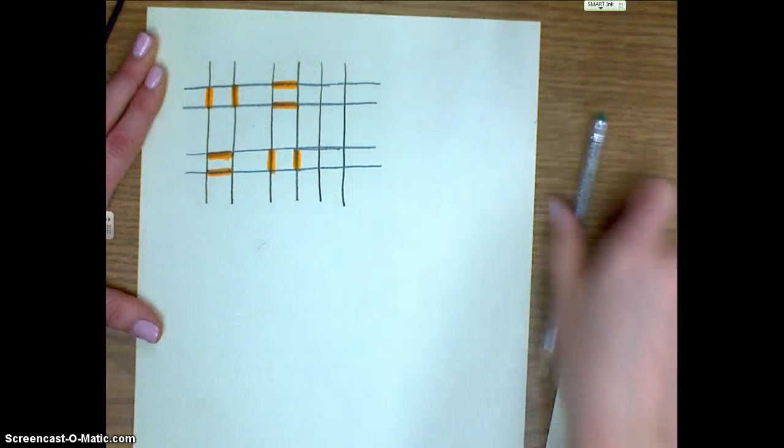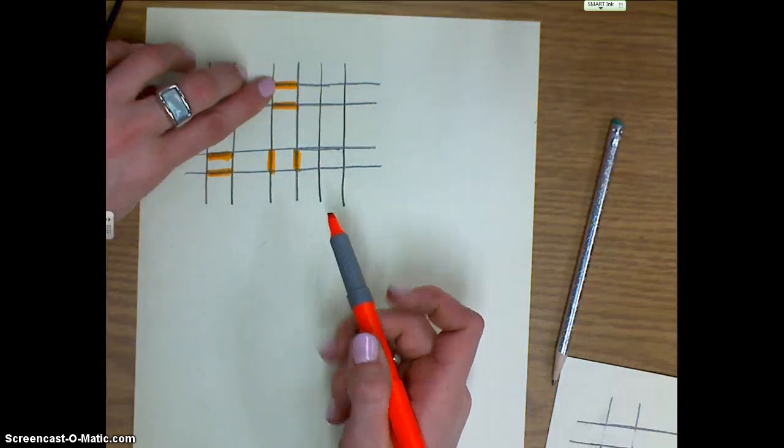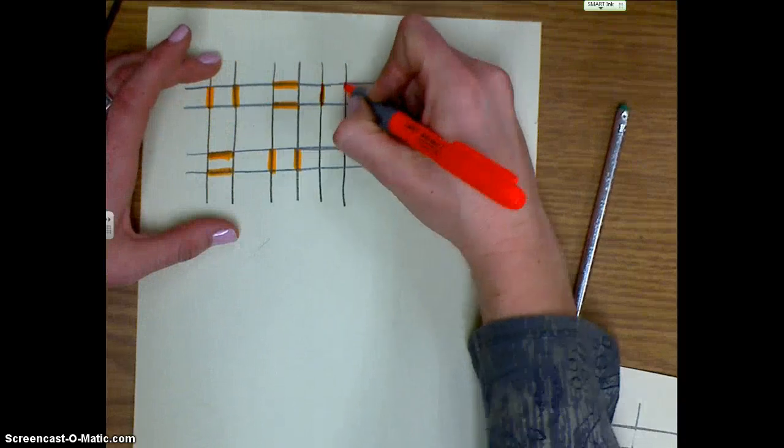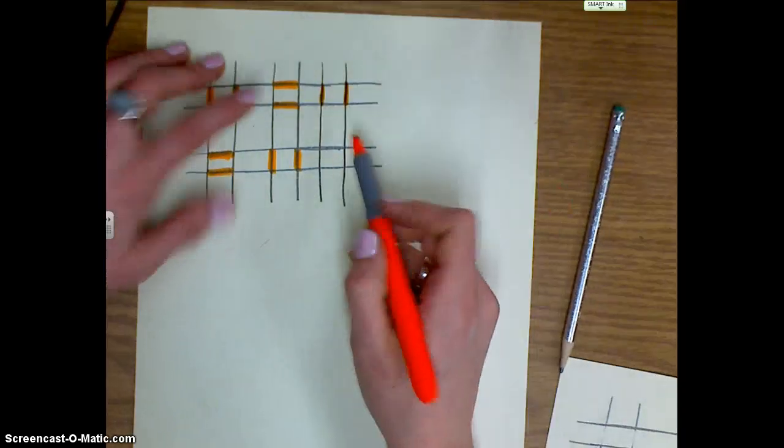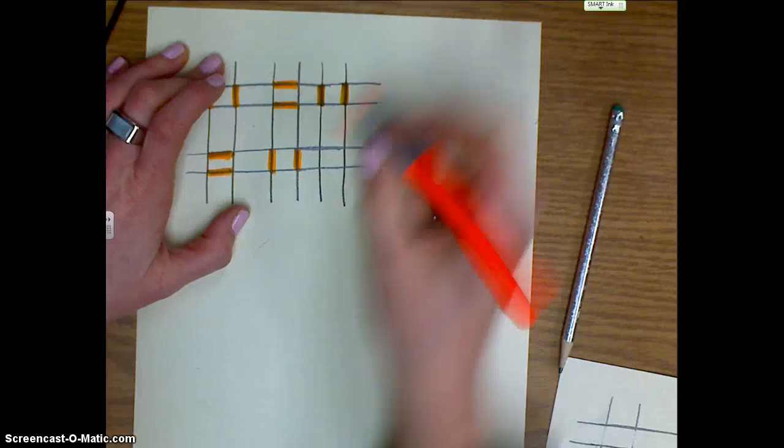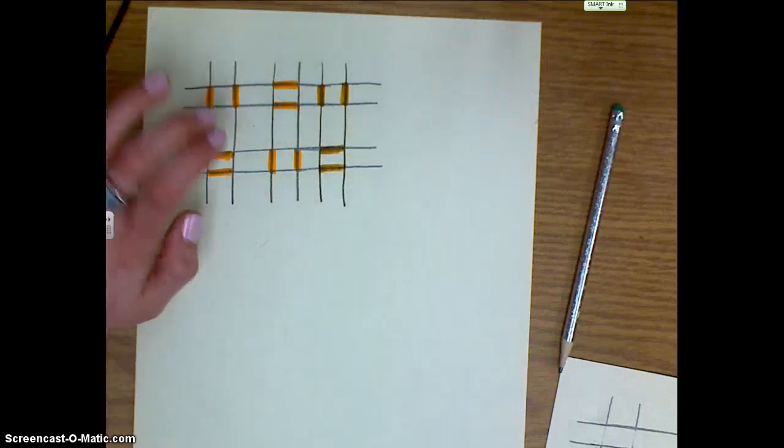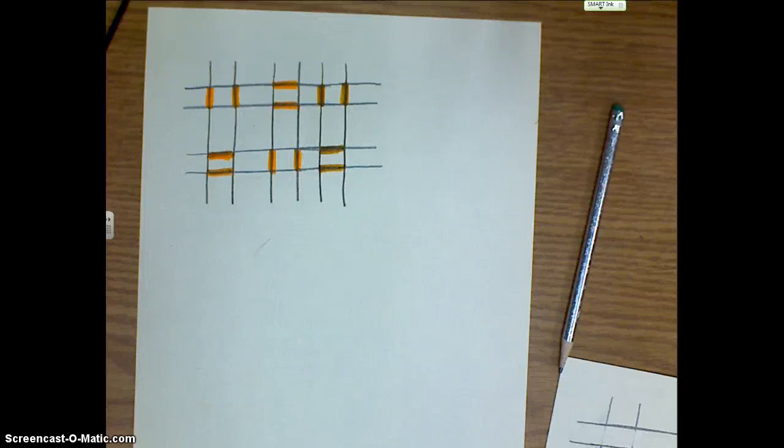Then you would erase the opposite. Since here I erased the horizontal lines, here I would erase the vertical lines. And since I erased the vertical lines above it, right here I'm going to erase these horizontal lines right below it. That would then build onto that pattern.